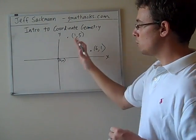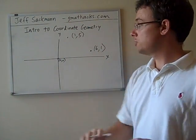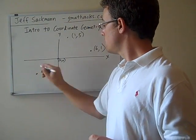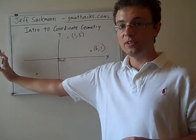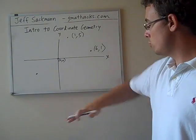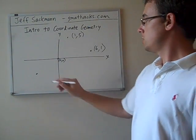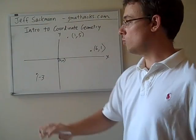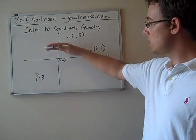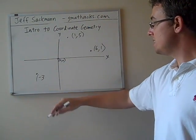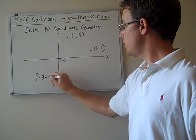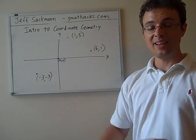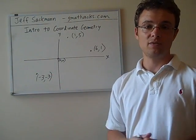Let's see what happens when we go in the opposite direction. What about this point right here? We're going to the left of the origin and down from the origin. So this one is about 3 over from the origin, so that's minus 3, and about 3 down from the origin, another minus 3. Because it's to the left and down, we're dealing with two negative numbers.